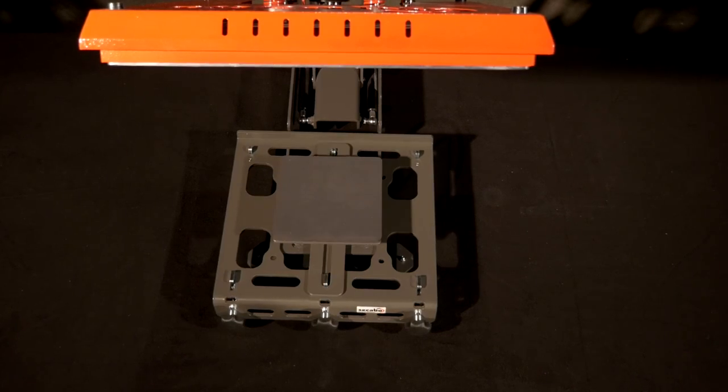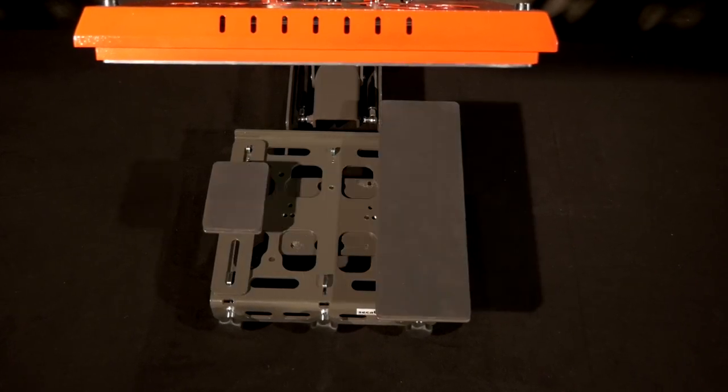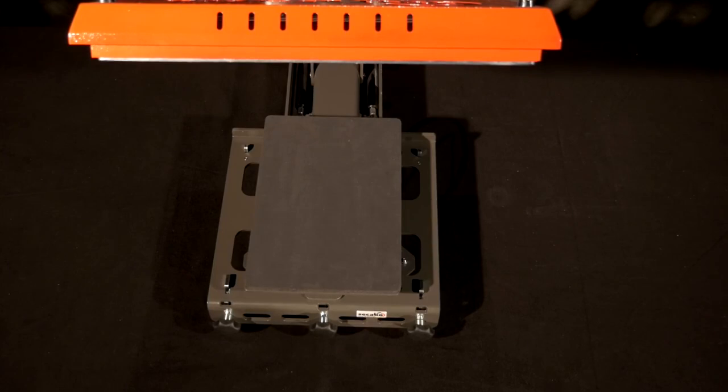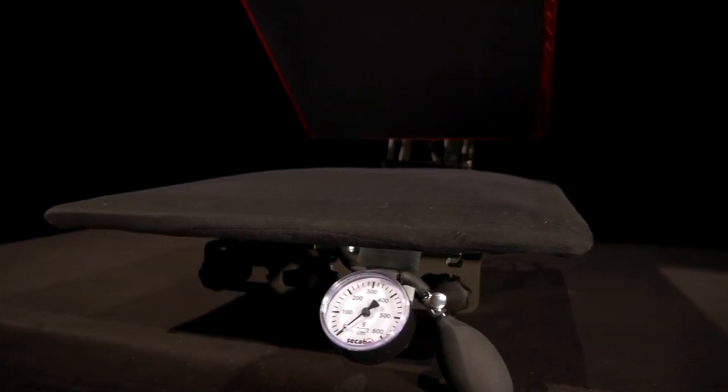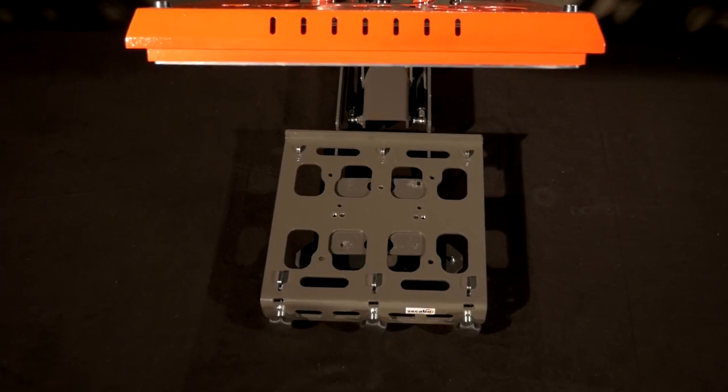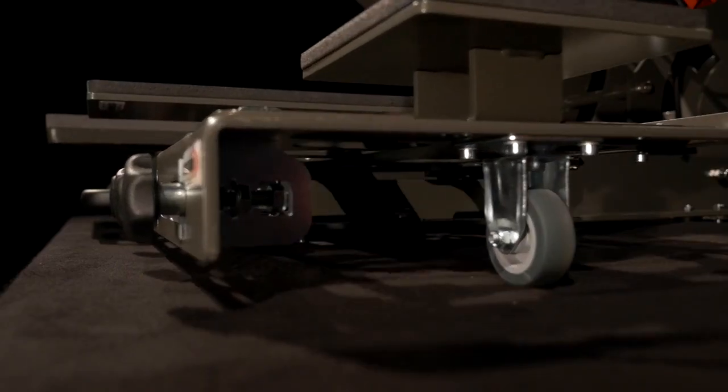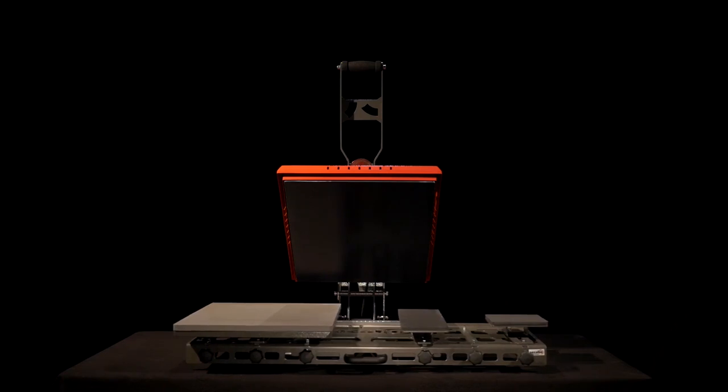Optionally, the Secabo TC5 and TC7 can be equipped with various formats of removable plates, including a membrane base plate, a quick change system as well as slide extension for use as a double plated press.